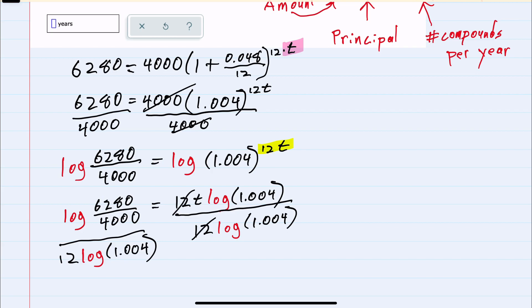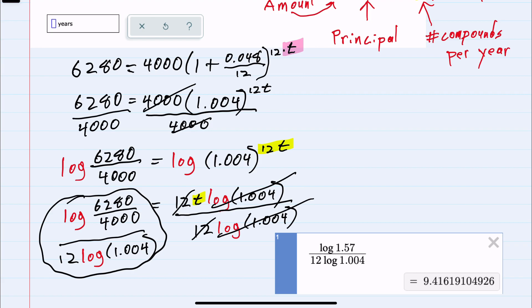canceling everything on the right except for the T. We can plug this expression into a calculator such as Desmos to get our decimal approximation. You can see that I simplified 6280 divided by 4,000 as just 1.57, since that did not include any rounding.